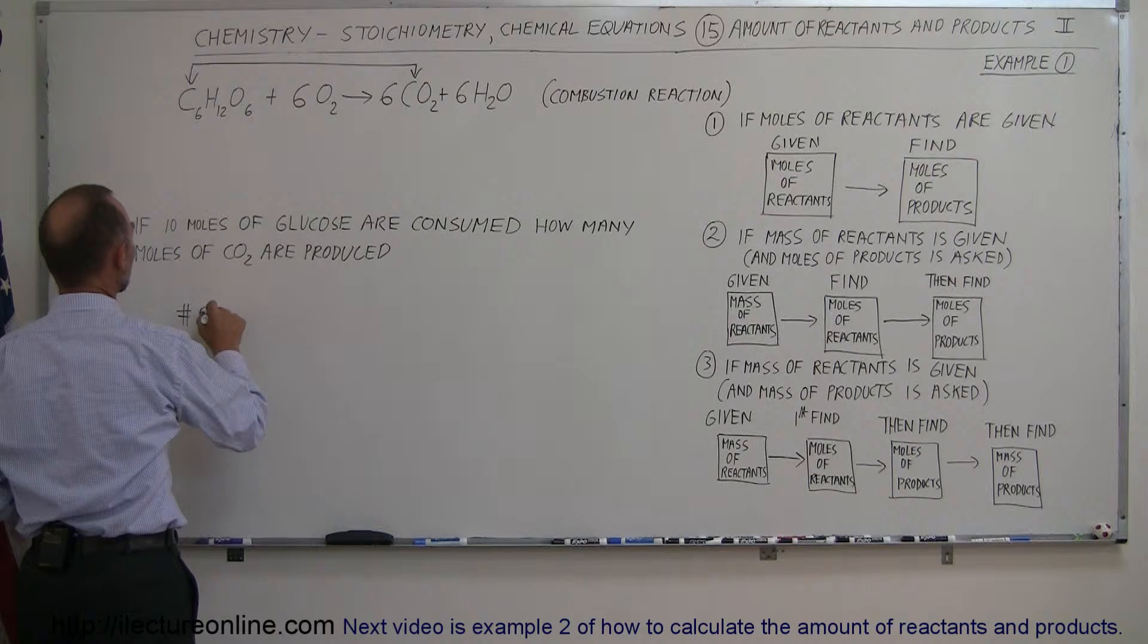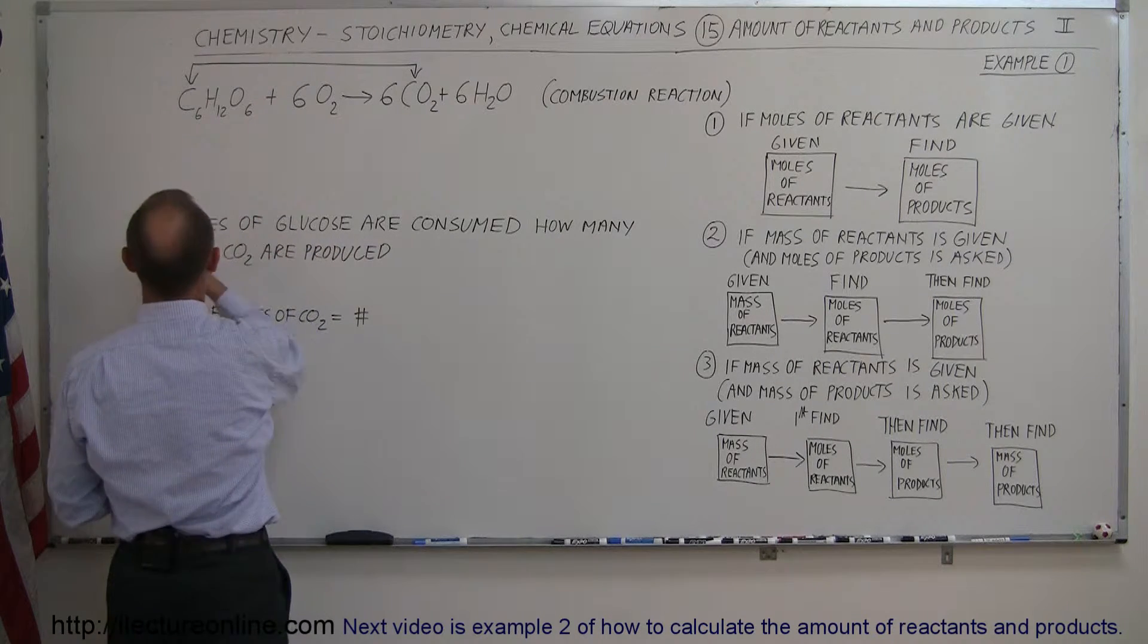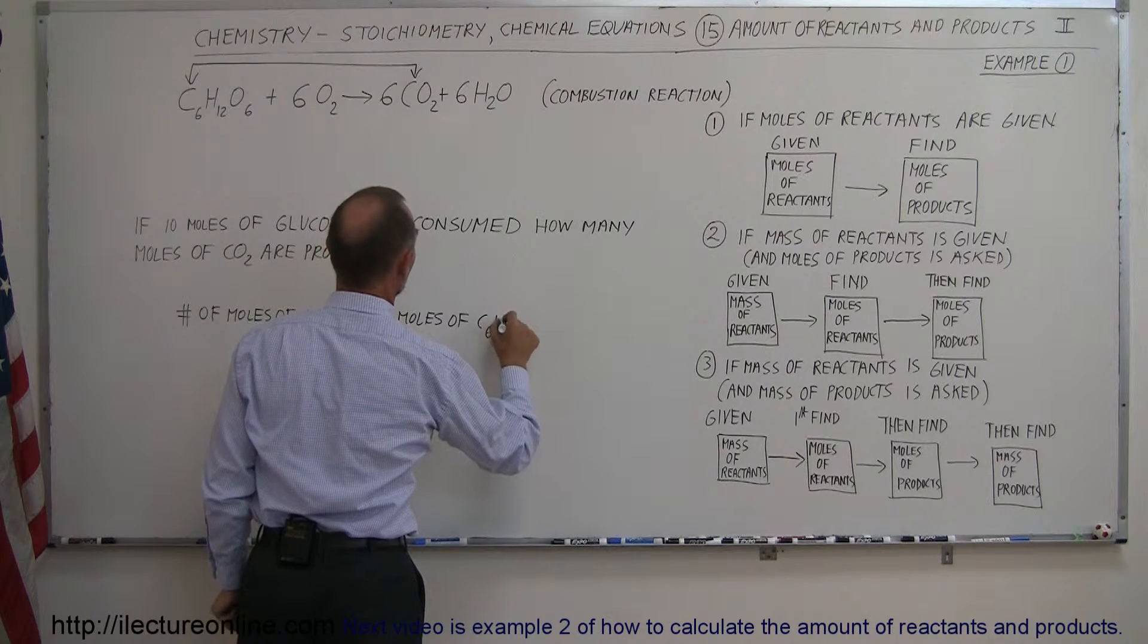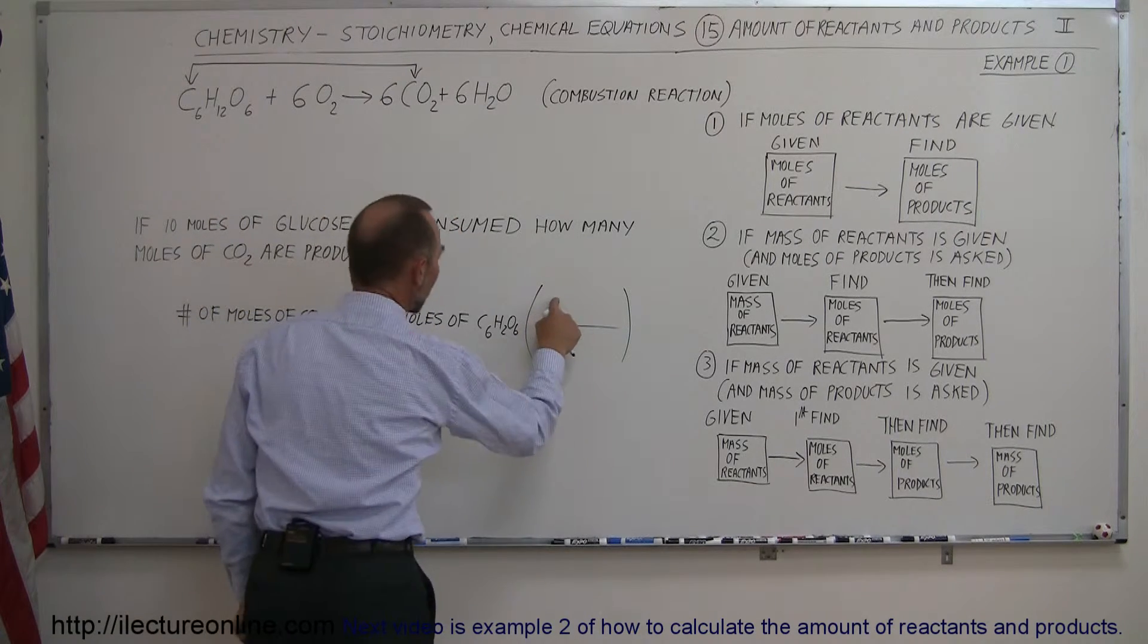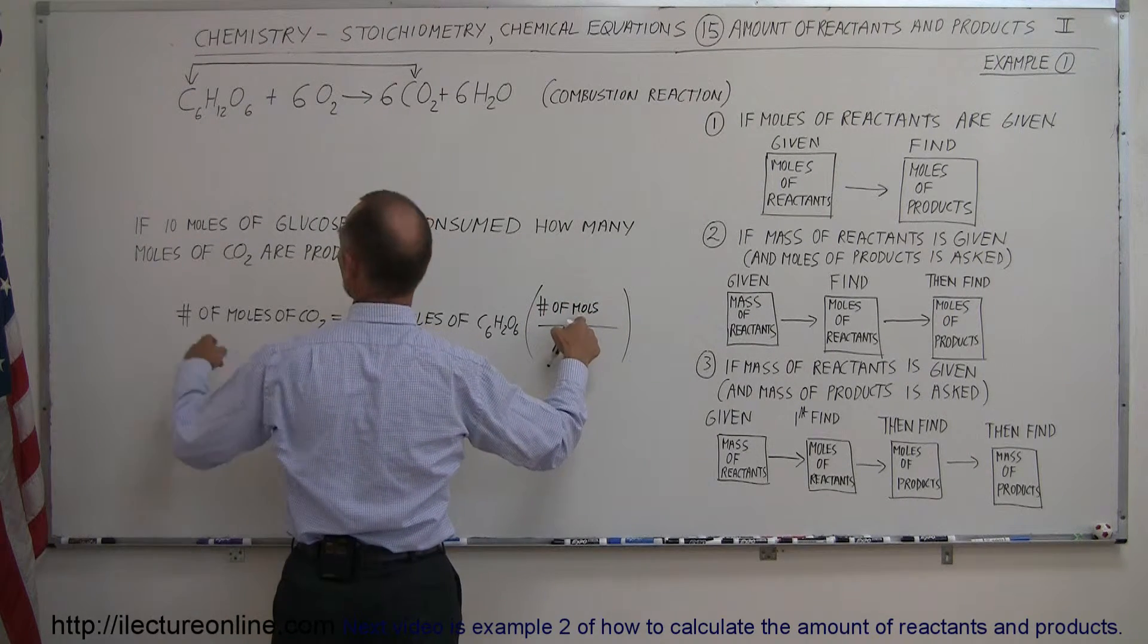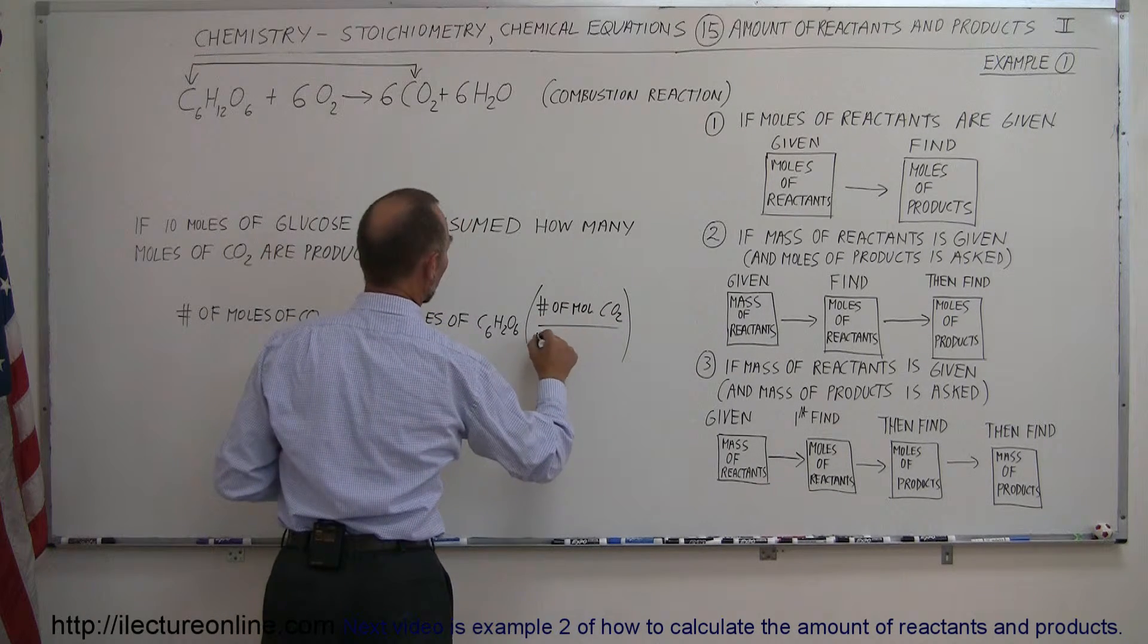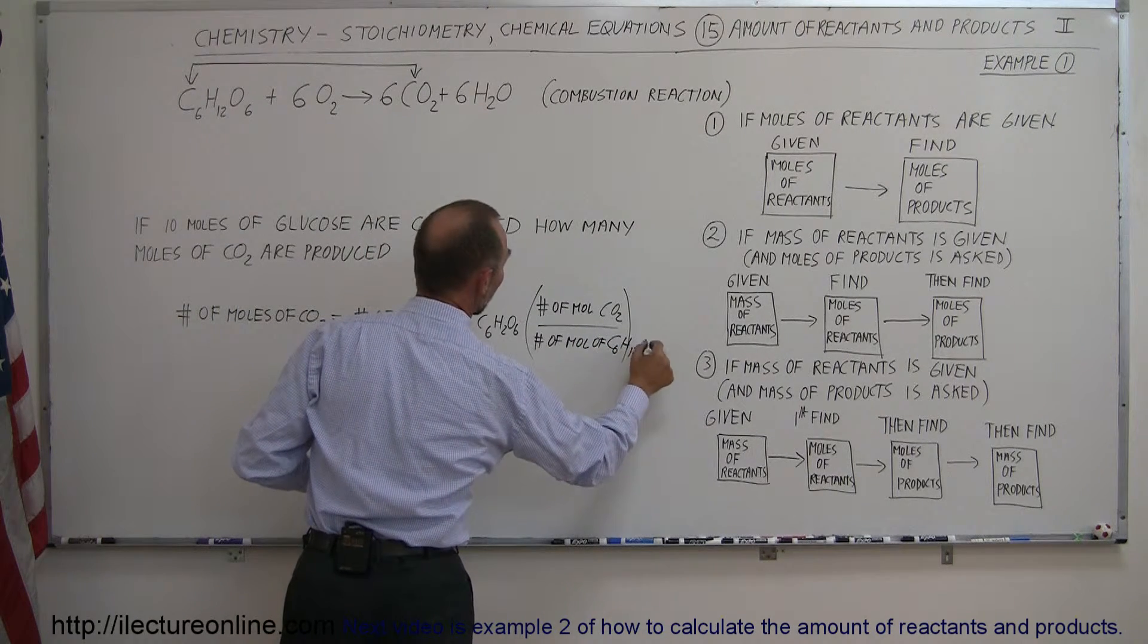So number of moles of CO2 is equal to the number of moles of the reactant that's given here. So the number of moles of glucose, that would be C6H12O6, and then we multiply that times the ratio of the number of moles of the product divided by the number of moles of the reactant. So mole of CO2 divided by the number of moles of the original C6H12O6 or glucose.